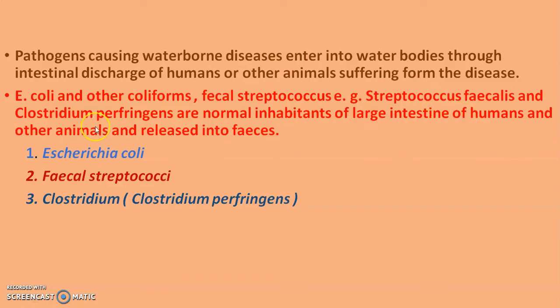Streptococcus fecalis and Clostridium perfringens are normal inhabitants of the large intestine of humans and other animals, and can be released into fecal matter or feces. When such fecal matter gets mixed with the municipal water supply, the presence of these fecal coliforms or indicator organisms in that water supply indicates the possibility of the presence of pathogenic microorganisms.